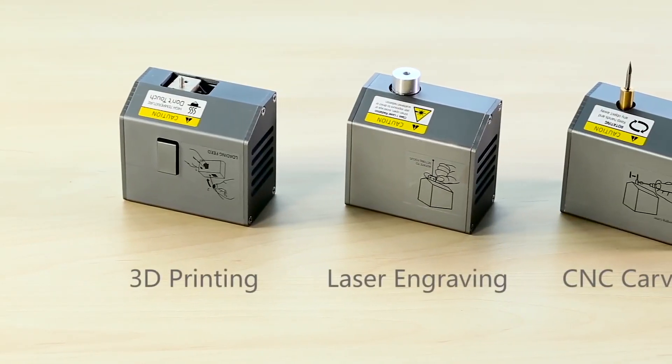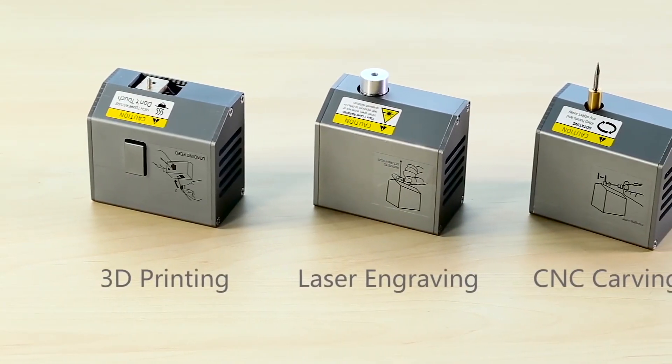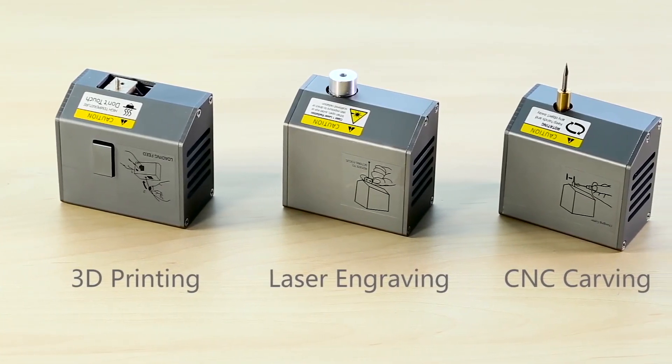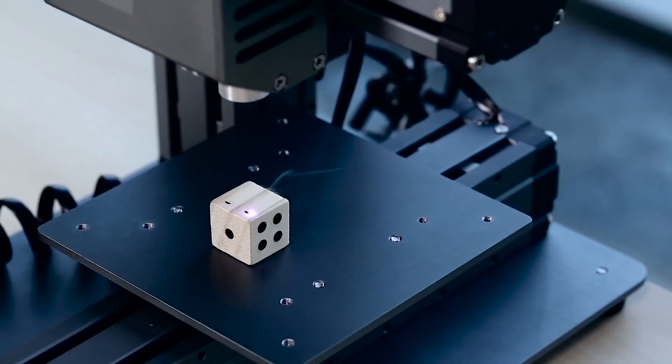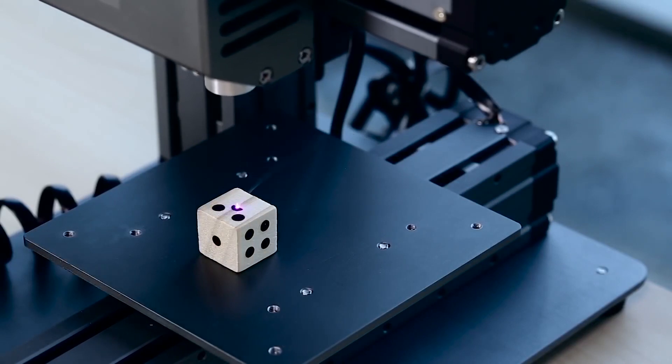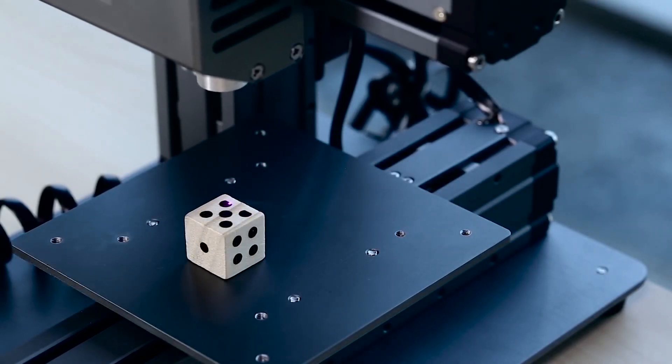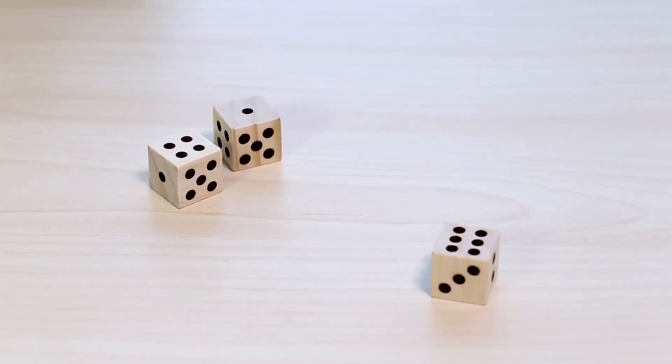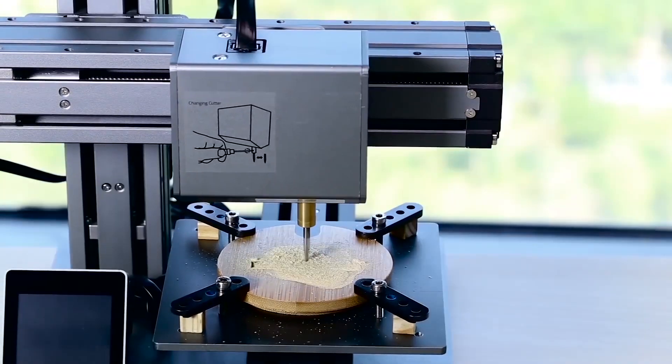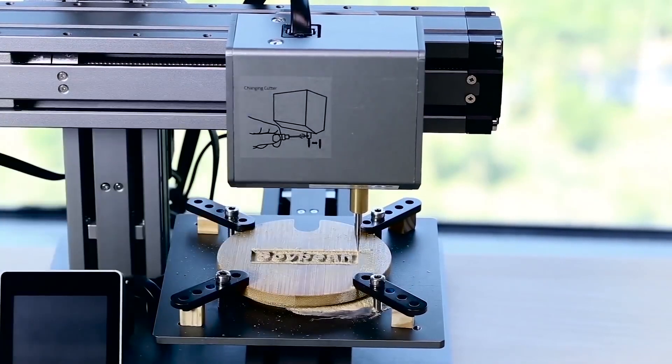Snapmaker also features expanded options of laser engraving and CNC carving. With interchangeable heads, Snapmaker can be easily transformed into a laser engraver that sparks your creativity, and CNC carving machine that lets your imaginations run wild.